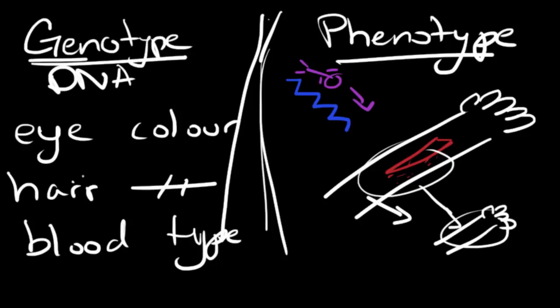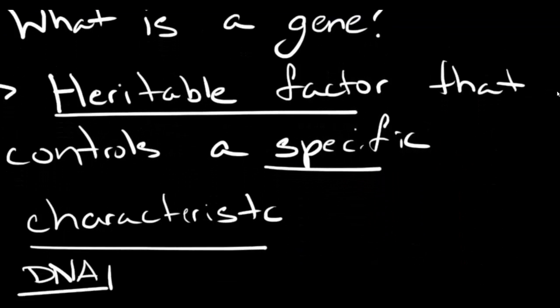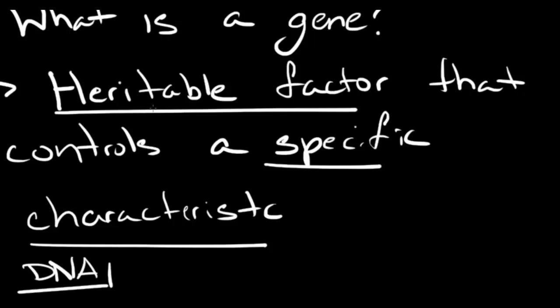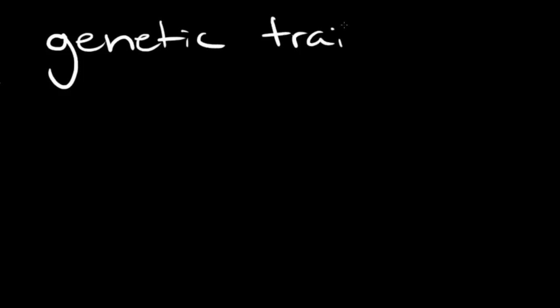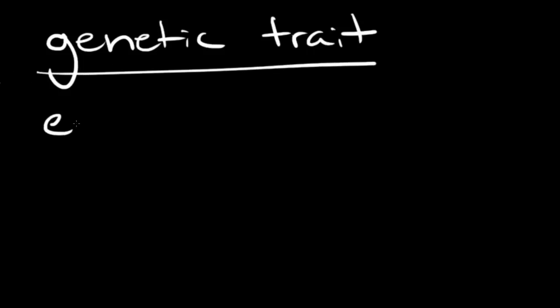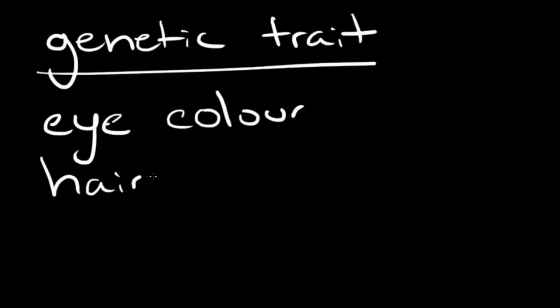Now that this is easily understood, let's go back to the definition. A heritable factor that controls a specific characteristic — this specific characteristic is called a genetic trait. Examples of genetic traits, part of the genotype, and most commonly associated with genetics, are always going to be your eye color, your hair color, and your blood type.